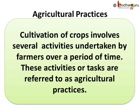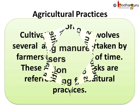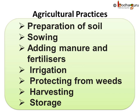To summarize what we learned today: cultivation of crops involves several activities undertaken by farmers over a period of time, referred to as agricultural practices. These include preparation of soil by plowing or tilling, sowing of good quality seeds, adding manure and fertilizers, irrigation, protecting crops from weeds, harvesting the mature crop, and storing it properly to protect from rats and insects. A lot of effort and sweat of the farmer goes into cultivation of crops.